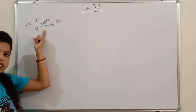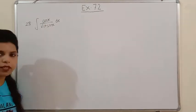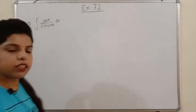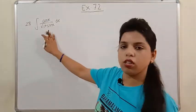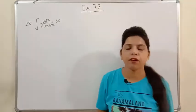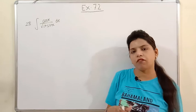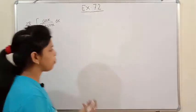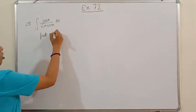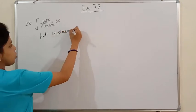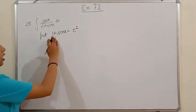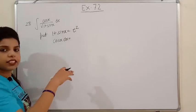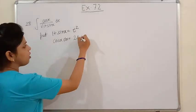Next is question 28: integration of cosx/√(1+sinx). Here we can see that cosx is the derivative of sinx, but the problem is the function is under a square root. As just explained, when there is a radical, put the value as t² to simplify. So let 1+sinx = t². The derivative of 1 is 0 and the derivative of sinx is cosx dx, equal to 2t dt.